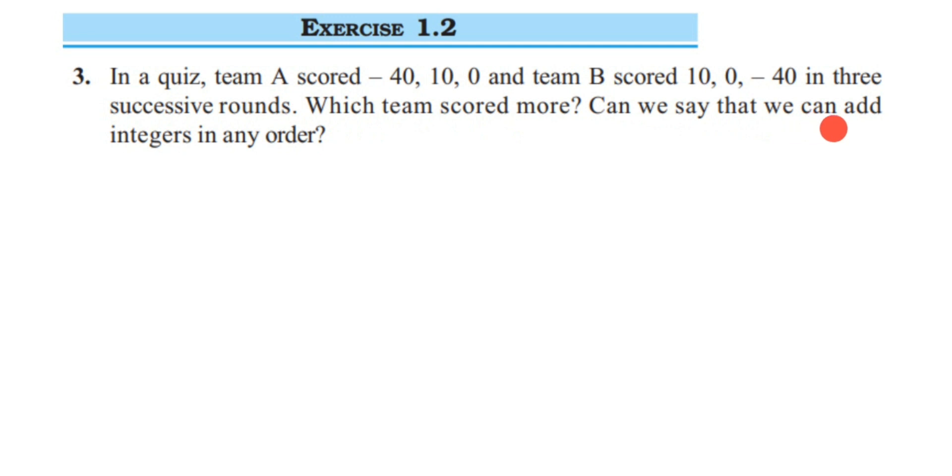If you observe here, scores of both teams are almost the same but the order is different. Here we have -40, 10, and 0, and here we have 10, 0, and -40. So the integers are the same but the sequence is different, and they're asking which team scored more.